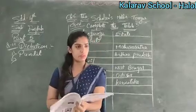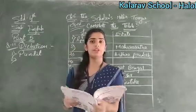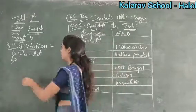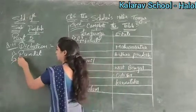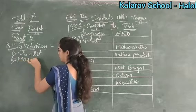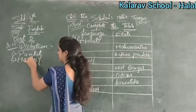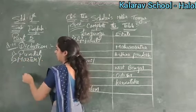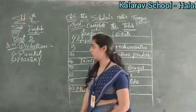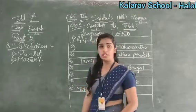What is the second number? It is given: Mastery. Now here, mastery — the spelling is M-A-S-T-E-R-Y. Clear?